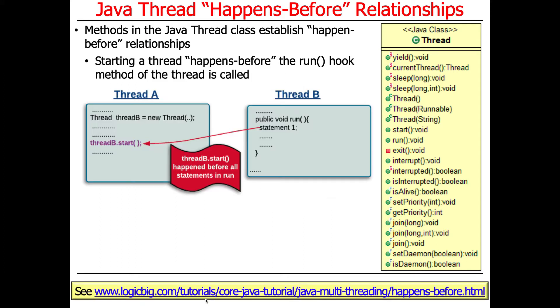Starting a thread clearly happens-before the run hook method is called. So when you say start on a thread, that will create another thread, and the thread has to be initialized before it starts to run.